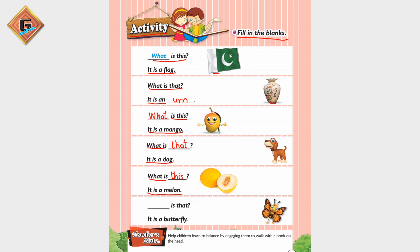'Dash is that' — 'What is that?' We are going to write 'what' here. 'What is that?' — 'It is a butterfly.' 'It is a butterfly.'